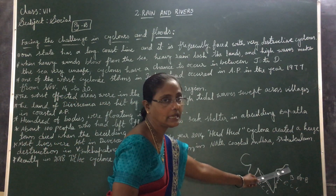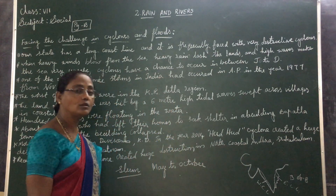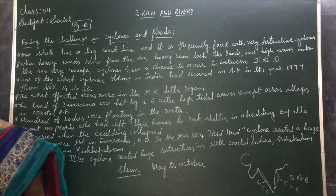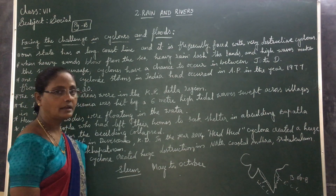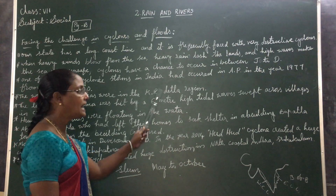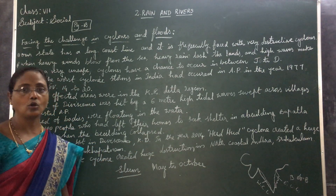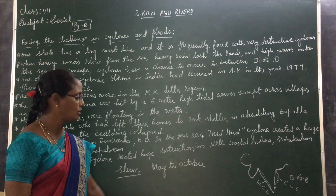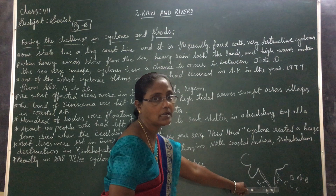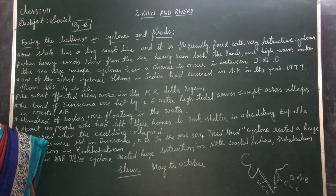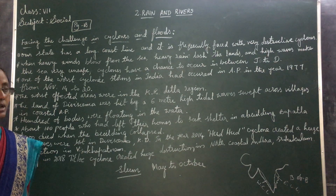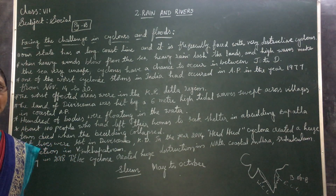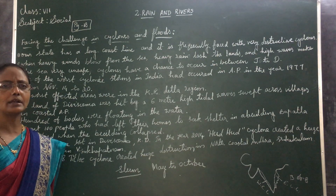Where is the Bay of Bengal? It is in the east. The cyclones occur from May to October, formed in the Bay of Bengal. Which areas are affected by cyclones? Coastal areas are most affected by cyclones — whenever cyclones occur, only coastal areas are affected.